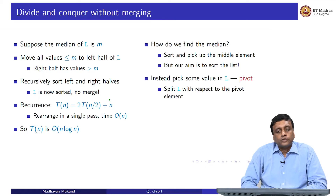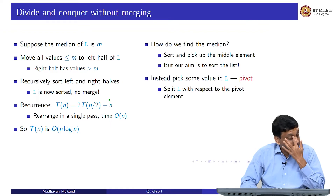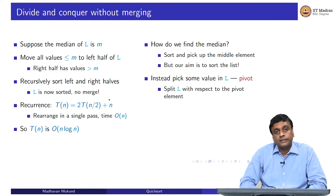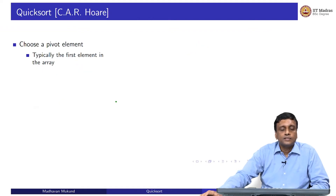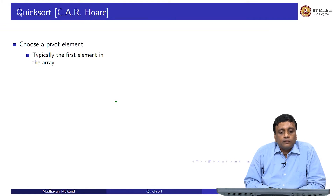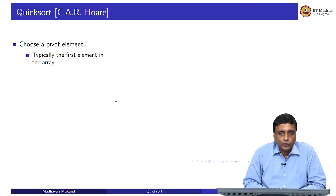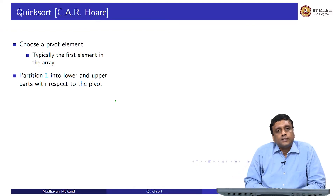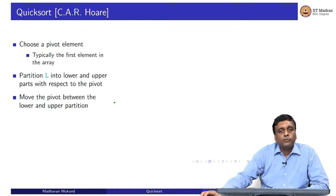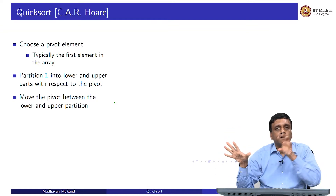Instead, what quicksort does is just pick some value in L — not necessarily the median — traditionally called a pivot element. You do the same thing as for the median: everything smaller than the pivot moves to one side, everything bigger moves to the other side. This algorithm is due to the famous computer scientist Tony Hoare (C.A.R. Hoare, where A stands for Antony). You choose a pivot, partition the list into lower and upper parts, then move the pivot in between.